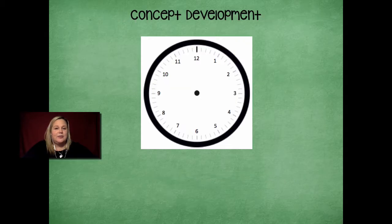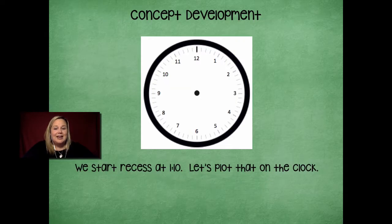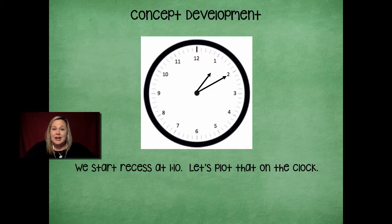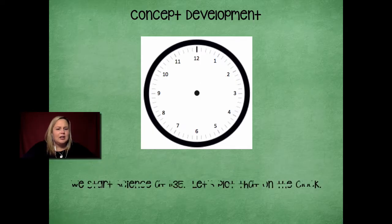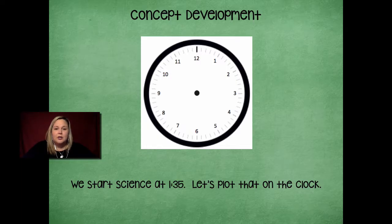Let's plot recess at 1:10 on our clock. The hour hand is going to be closer to the one because the hour is one o'clock. Then we find ten for our minute hand — the long one that goes all the way around — counting by fives: zero, five, ten. This represents 1:10 on the clock. Now use your clock to plot when we start science — model what 1:35 looks like. Go ahead and pause the video.